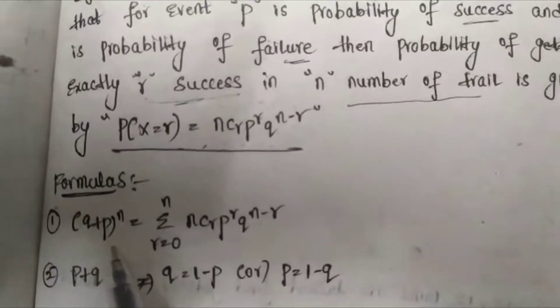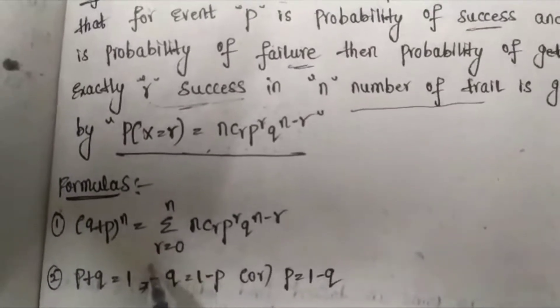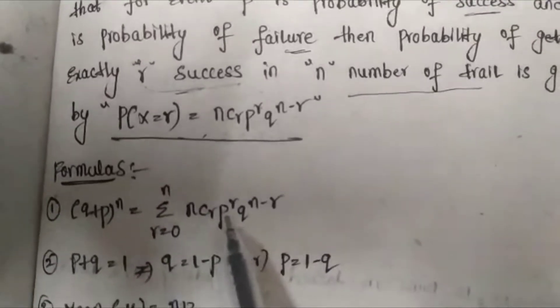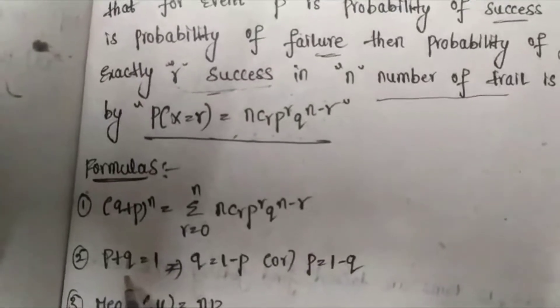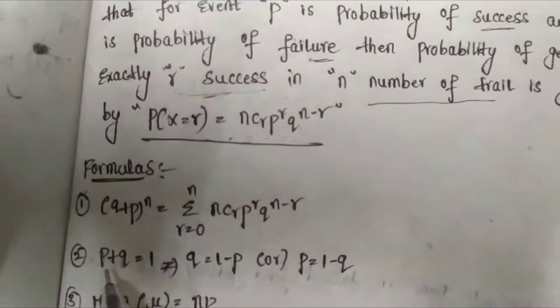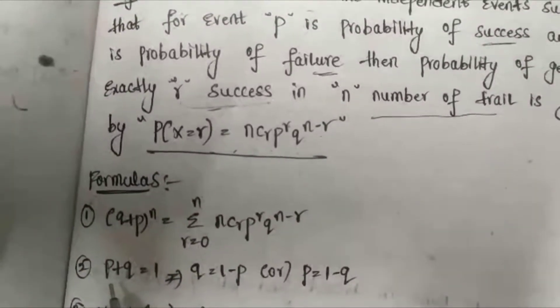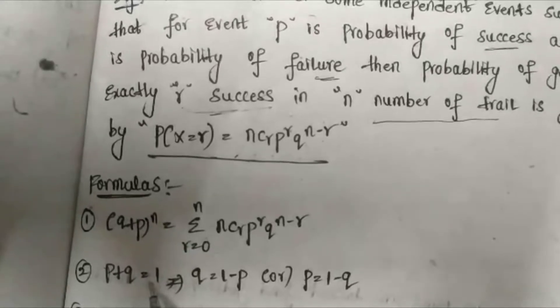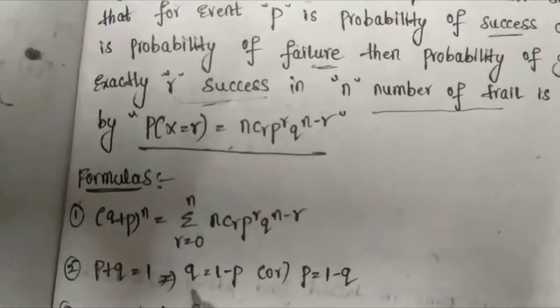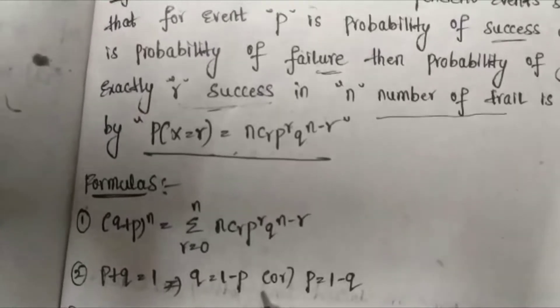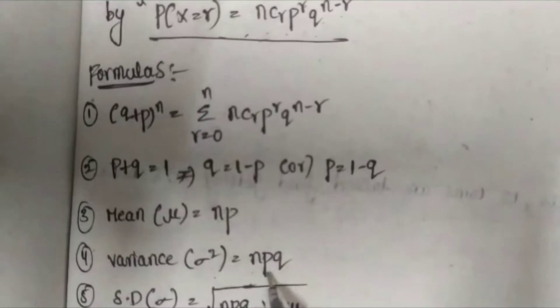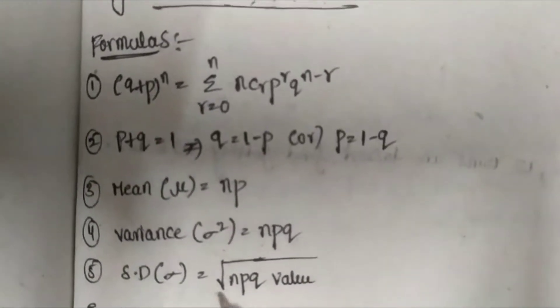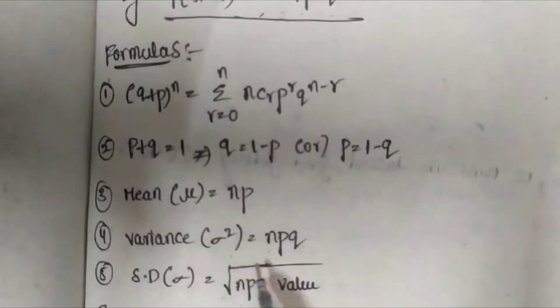The formulas to be learned: first one is (q + p)^n = summation from r=0 to n of nCr * p^r * q^(n-r). Second one is p + q = 1, this is Bernoulli's theorem, which means probability of success plus probability of failure always equals one. This gives Q = 1 - P and P = 1 - Q. Here mean mu = np, variance sigma squared = npq, and standard deviation sigma = square root of npq.